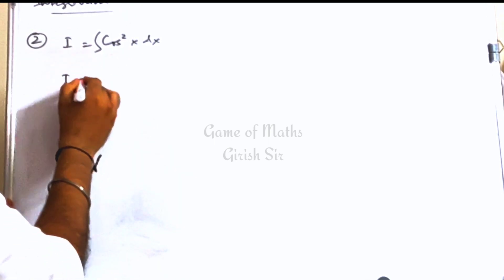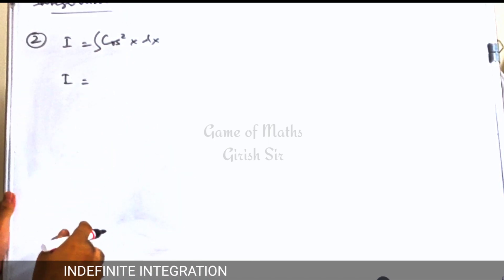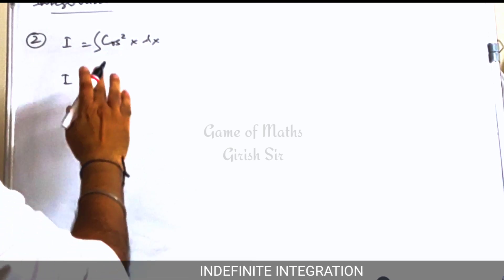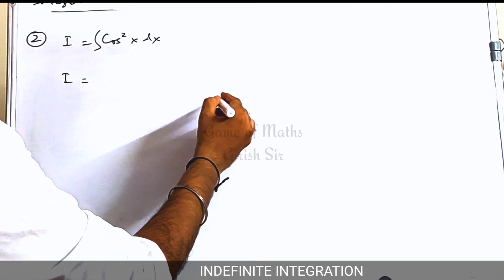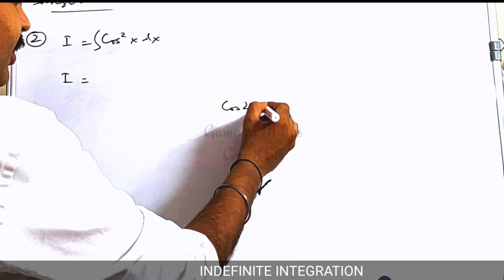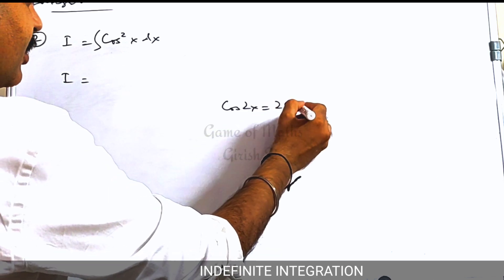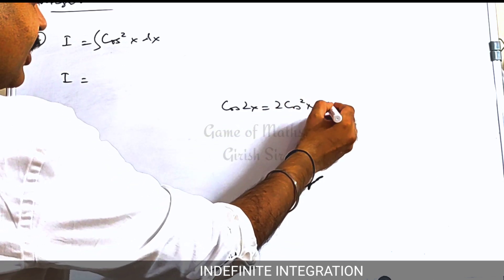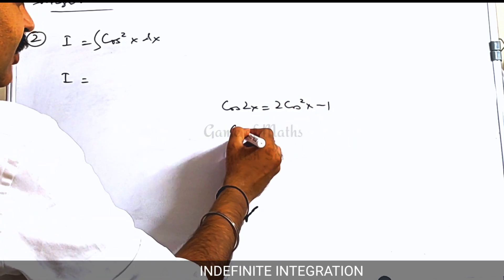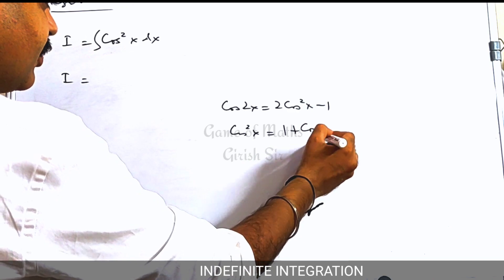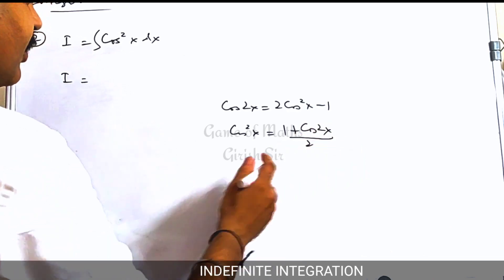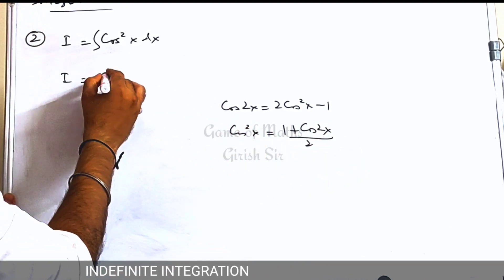Let's see another question. We have to integrate cosine squared x. We will again try to make it a linear function. For that you can use the result cos 2x = 2 cos squared x minus 1. So from here you can write cos squared x as (1 plus cos 2x) divided by 2. Put it here.